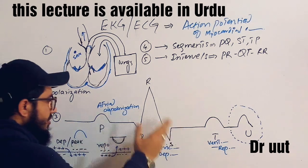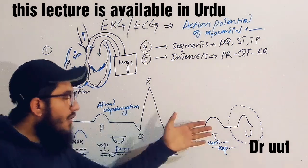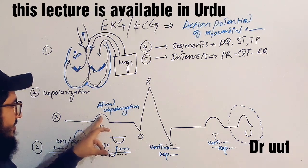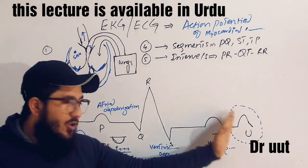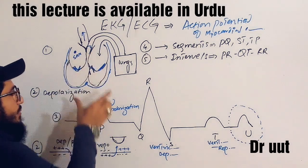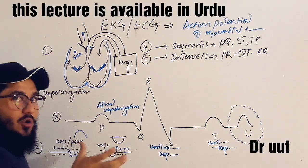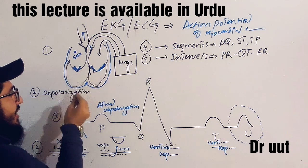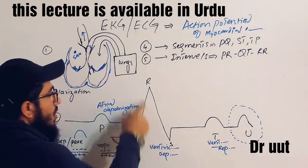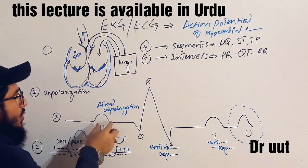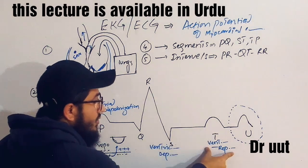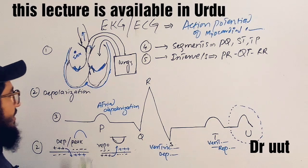Is this graph just for depolarization, or is repolarization also represented? Looking at the graph, we have the P wave, QRS complex, T wave, and U wave — setting U aside for now. The P wave stands for atrial depolarization, formed when the atria depolarize. After depolarization, contraction of the atria occurs, blood comes to the ventricles, and then ventricular depolarization occurs. The QRS complex stands for ventricular depolarization, and the T wave stands for ventricular repolarization.